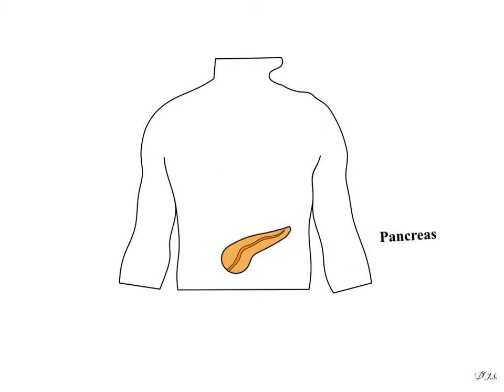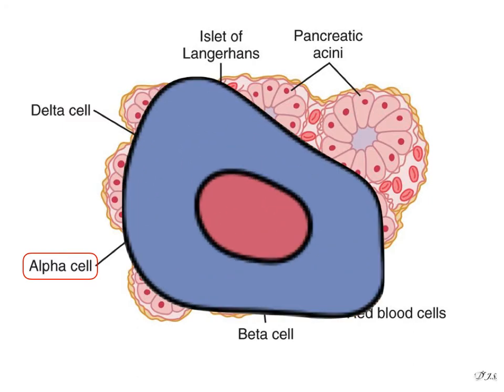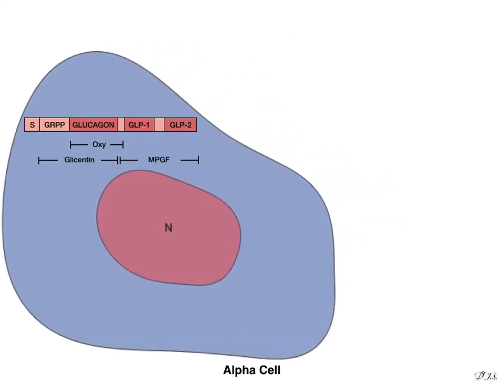Uncut section of the pancreatic tissue showing the alpha cell, which secretes glucagon. Glucagon is a 29 amino acid linear polypeptide with a molecular weight of 3485.